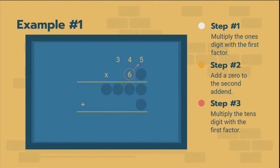So step three. Multiply the tens digit. That's the six. With the first factor. So we're going to multiply the six with the five, the six with the four, and the six with the three.